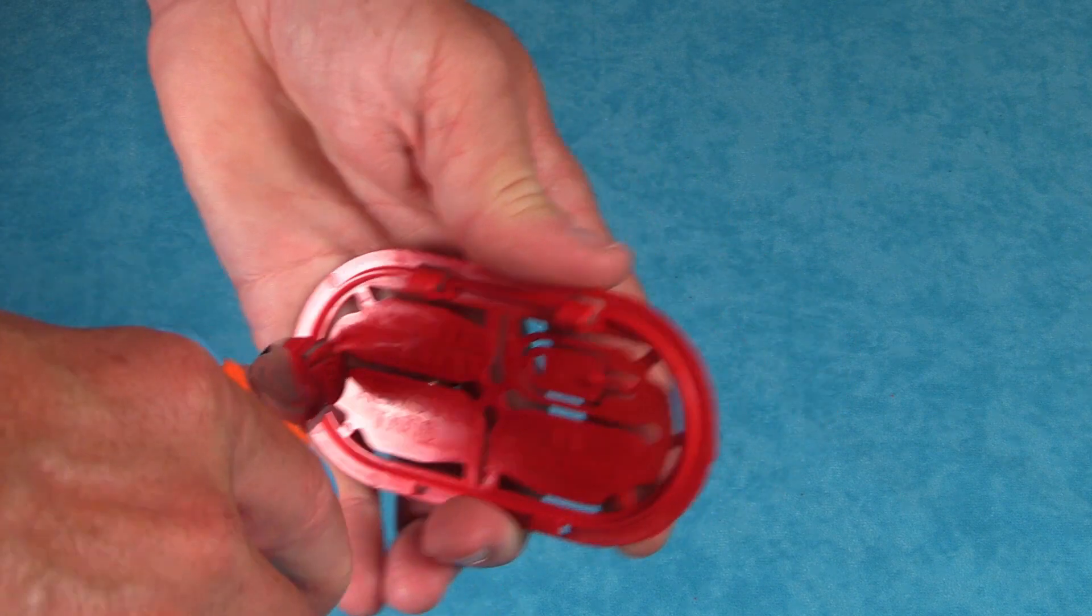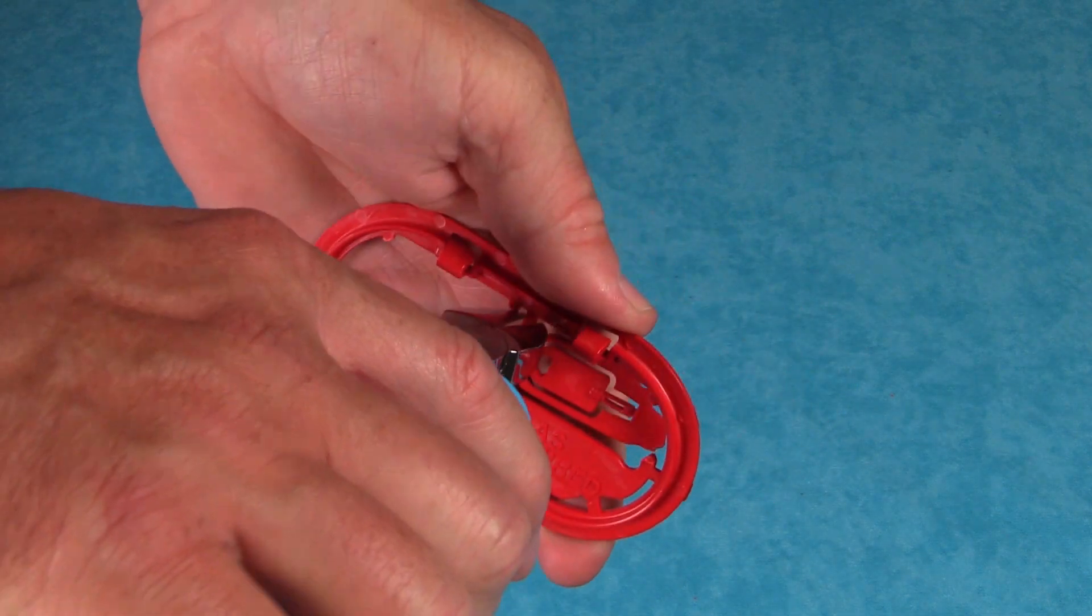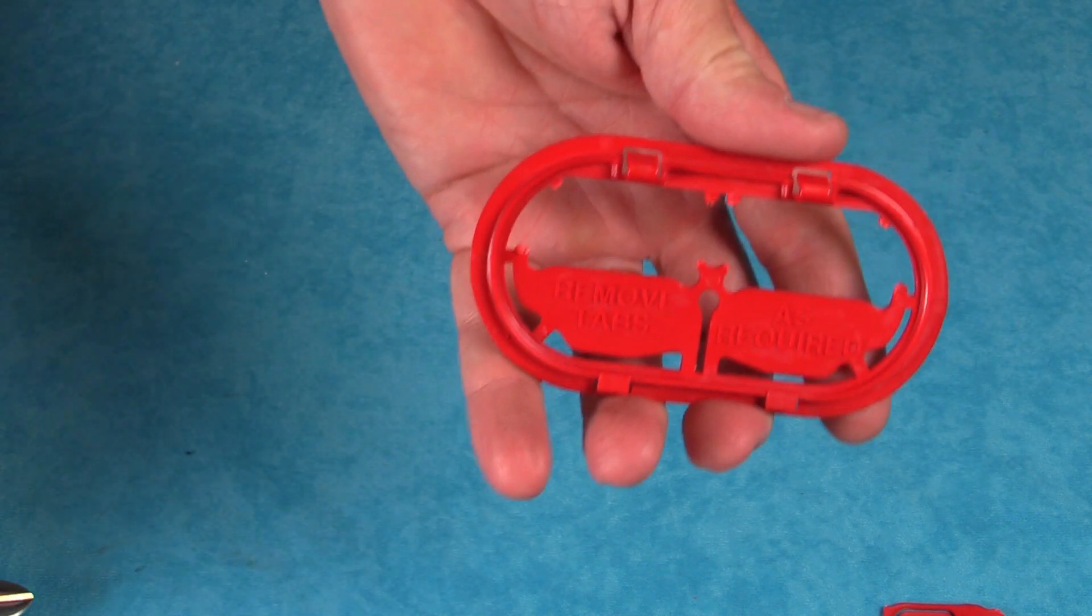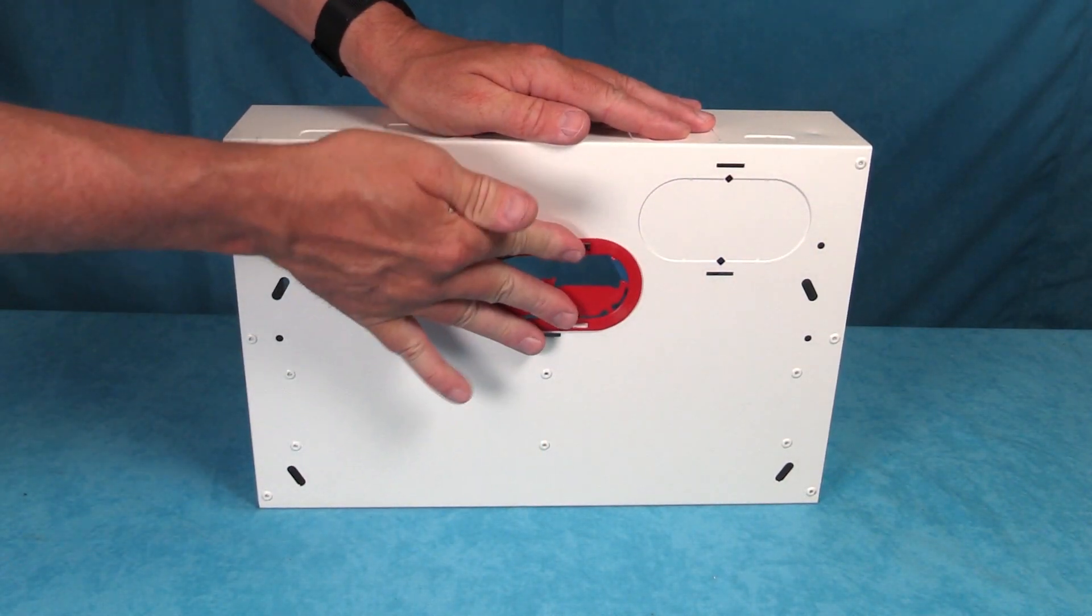In order to keep the sharp edges from damaging cables on entry, apply the cable protector plate by removing the tab sections as needed and simply pushing the plate into place over the hole.